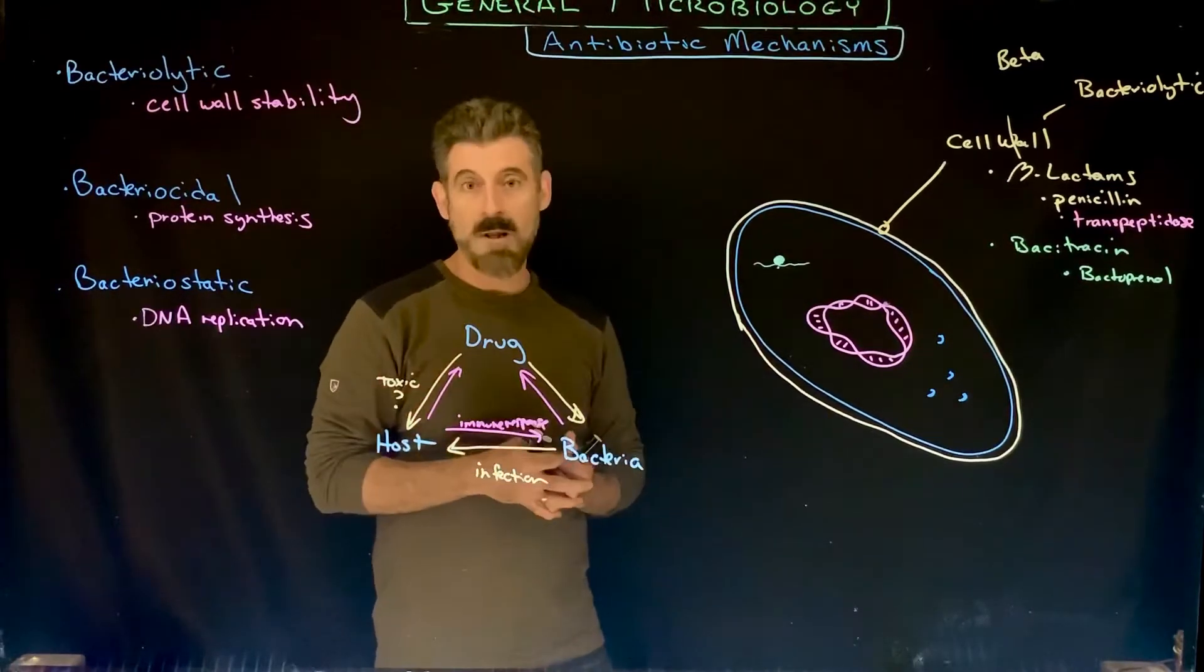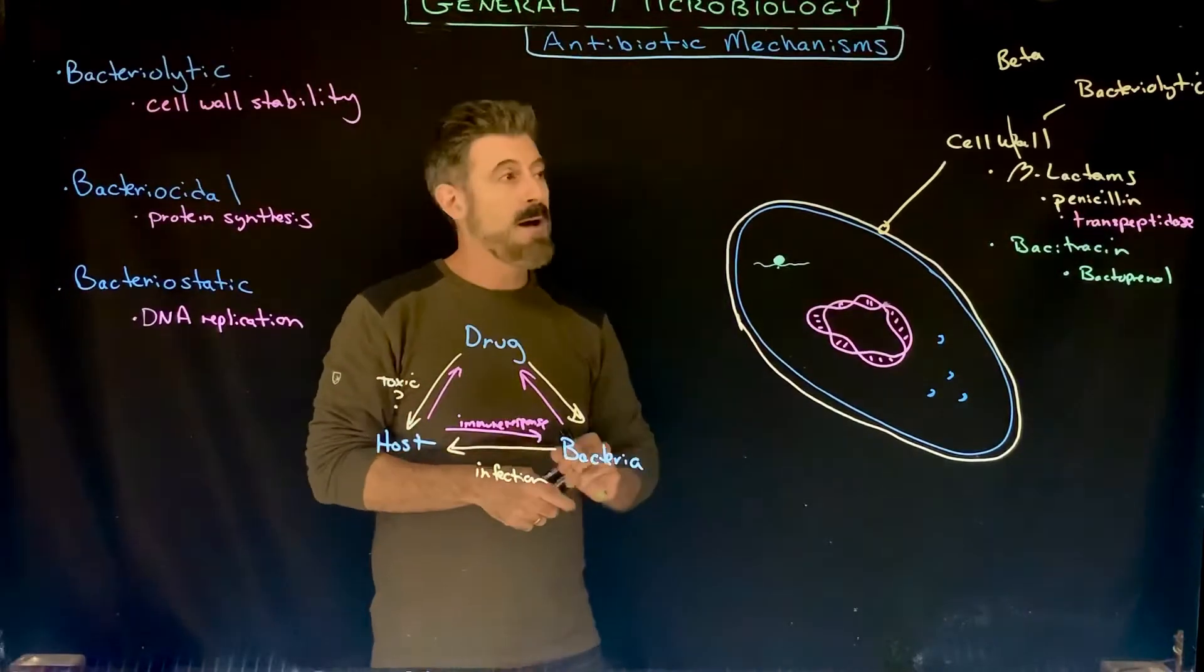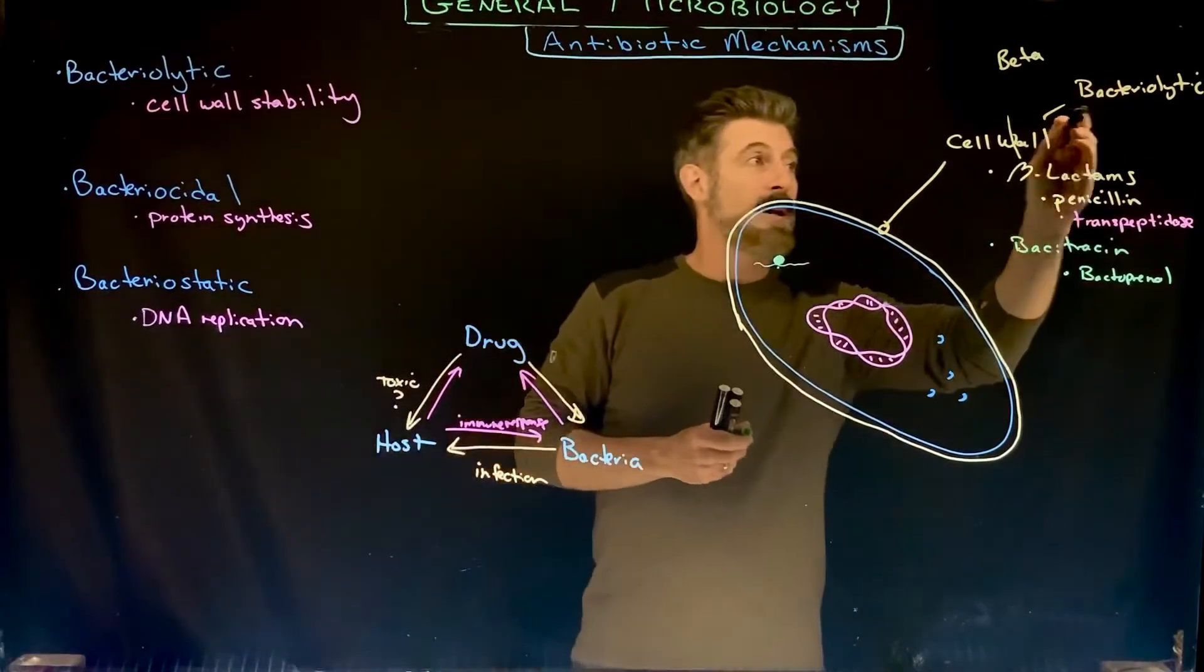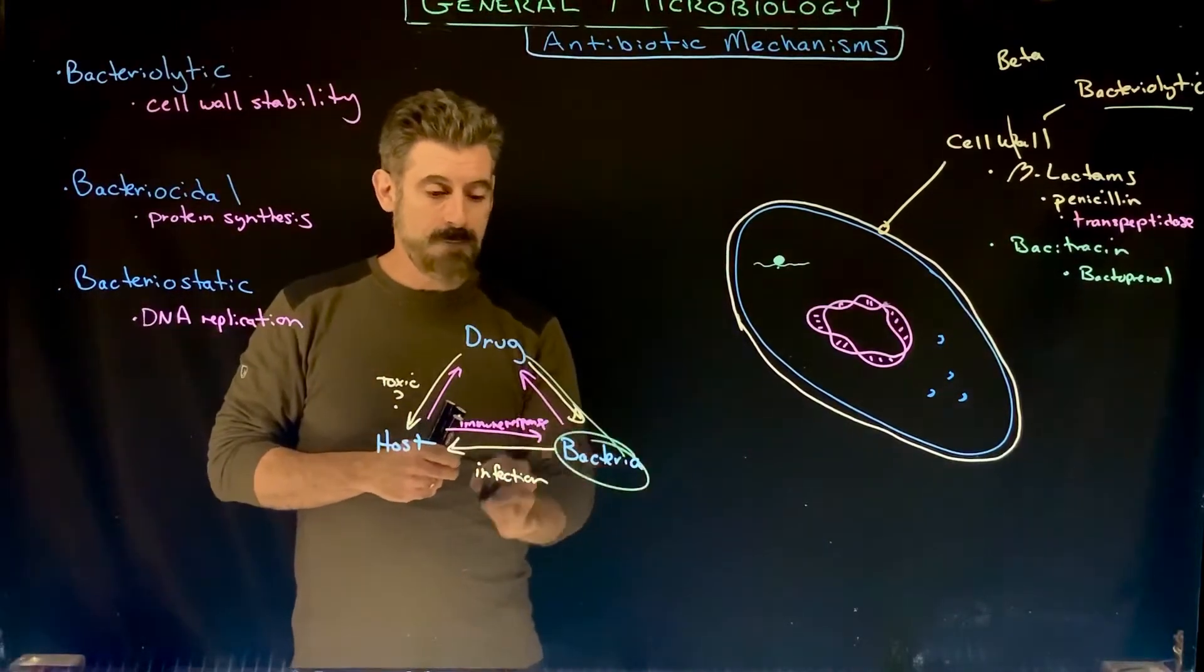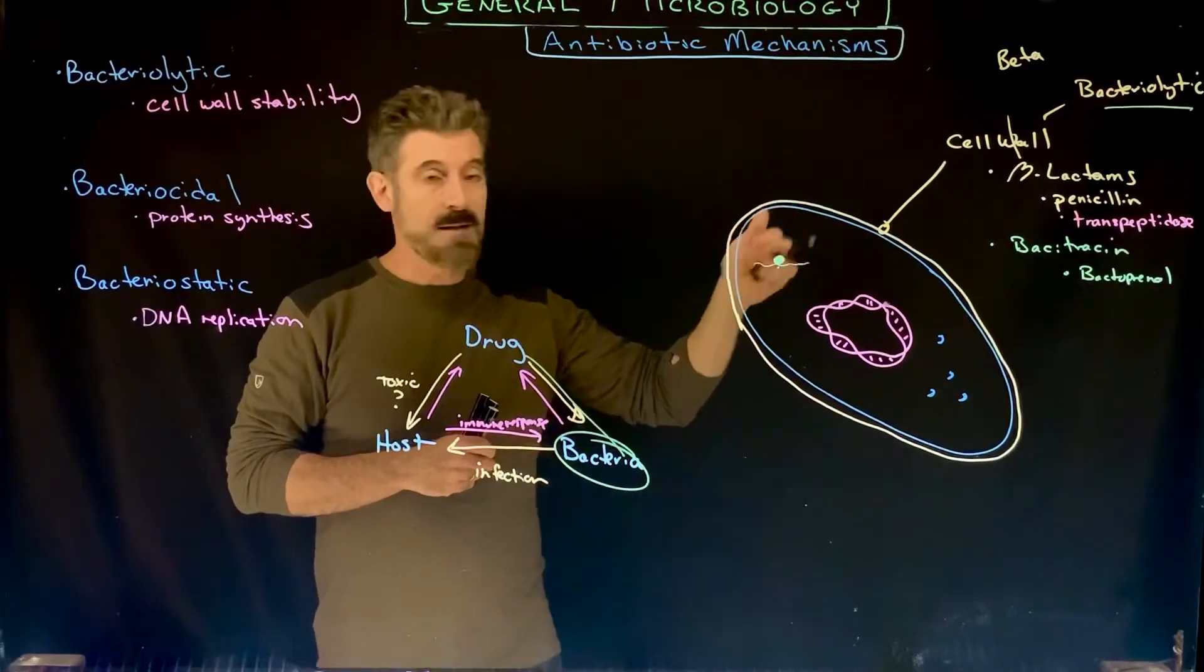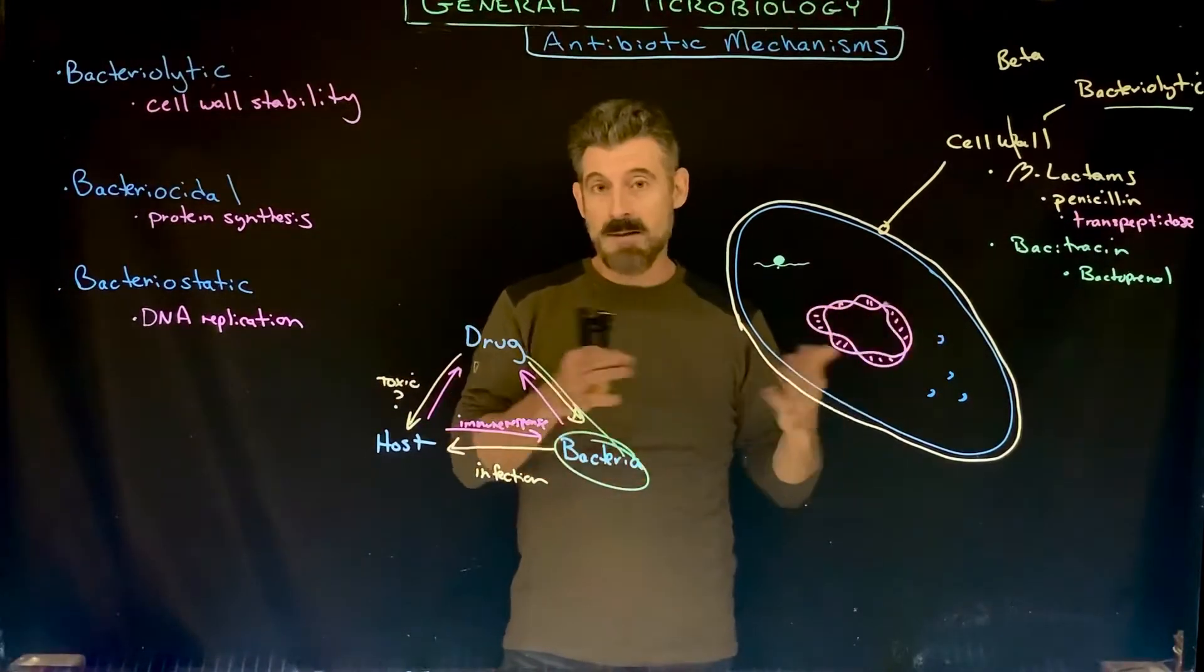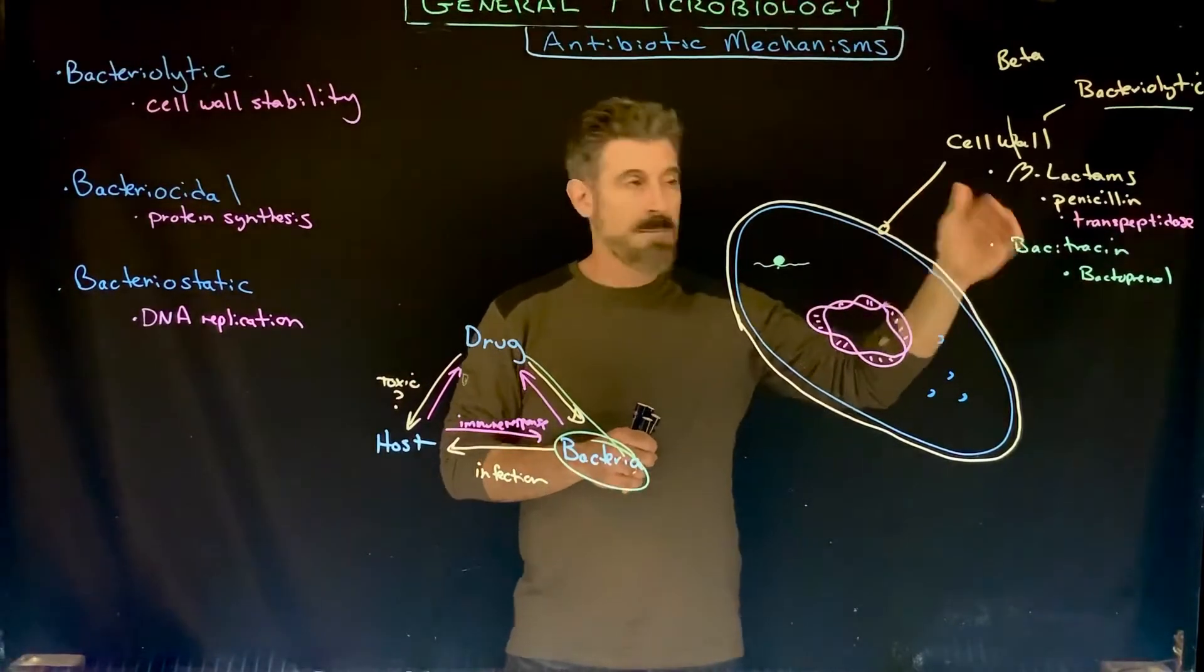If autolysin is cutting the cell wall but there's no new NAMs and NAGs to build it, then the cell wall would lyse again. There's a variety of other types of antibiotics that all kind of work on some of the chemicals involved in the cell wall. All those would typically be bacteriolytic.